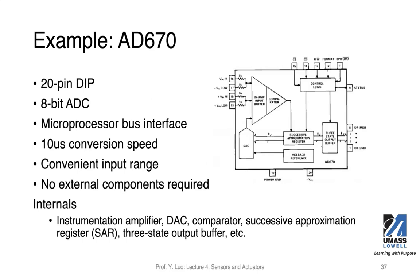In the next couple of slides, we want to look at one popular ADC chip, the AD670 from Analog Devices. It's a 20-pin DIP package and an 8-bit ADC, meaning every sample is 8-bit. It has pins to interface with microprocessors or microcontrollers, and its conversion speed is 10 microseconds. One good thing is you don't need other components to make this ADC work — internally it has amplifiers, a DAC to generate analog values based on digital code to compare, comparators, registers, and a tri-state output buffer.